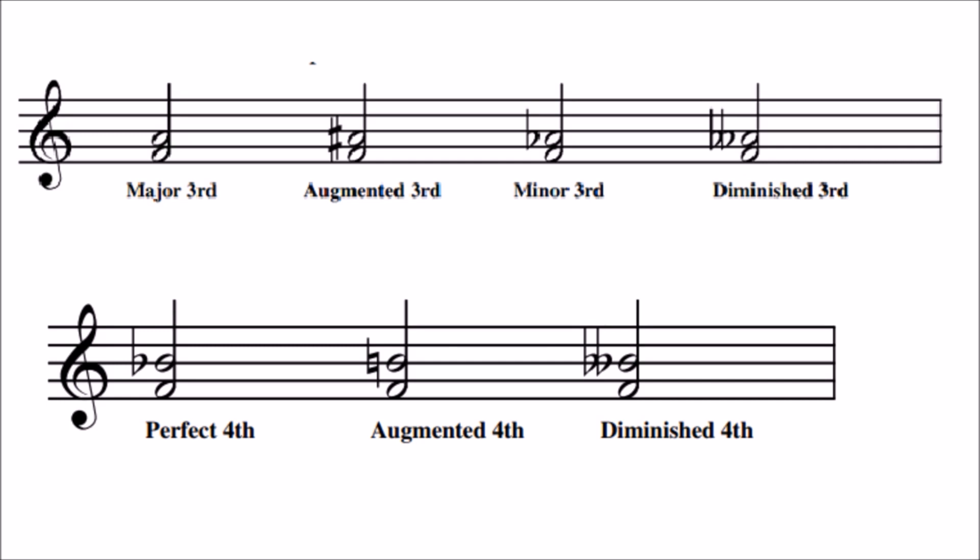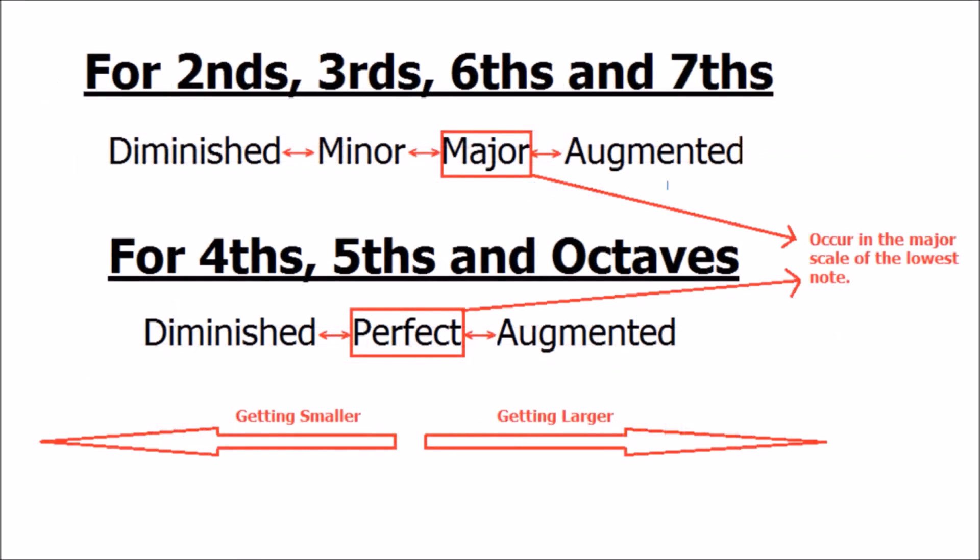Many people might find this quite complicated, but if you follow this flowchart you can't really go wrong. For seconds, thirds, sixths, and sevenths: if the upper note is in the major scale of the lower note it is a major interval; if it is a semitone less it's a minor interval; if it is a semitone more it's an augmented interval; and if it's two semitones less it is diminished. For fourths, fifths, and octaves: if the upper note is in the major scale of the lower note it is a perfect interval; if it's a semitone less it's diminished; and if it's a semitone more it's augmented.